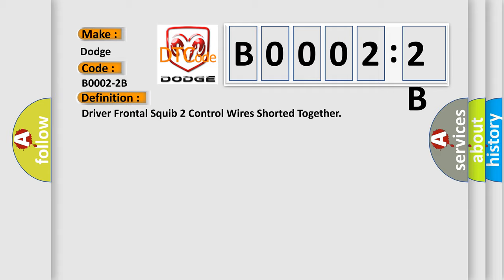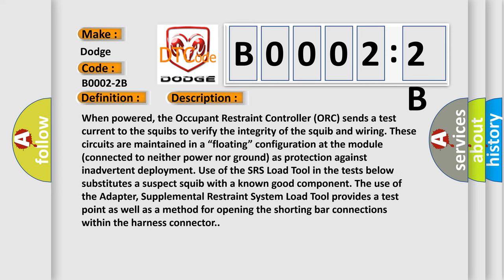And now this is a short description of this DTC code. When powered, the occupant restraint controller sends a test current to the squibs to verify the integrity of the squib and wiring. These circuits are maintained in a floating configuration at the module connected to neither power nor ground as protection against inadvertent deployment. Use of the SRS load tool in the tests below substitutes a suspect squib with a known good component.